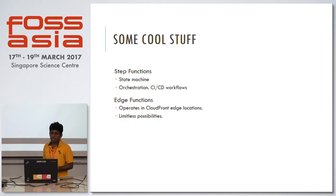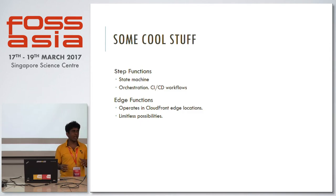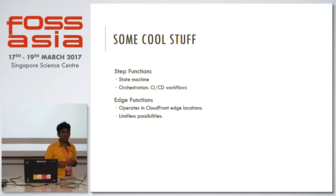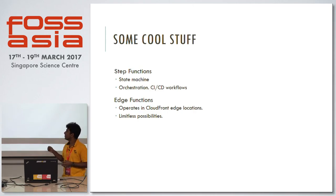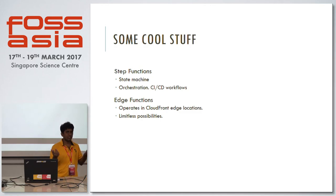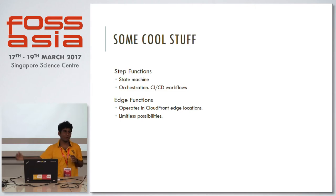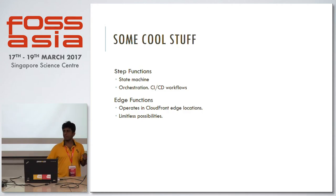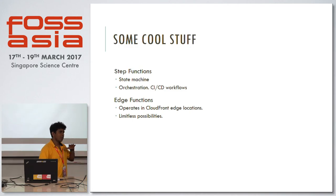There are a lot of cool things coming up, like Step Functions and edge functions. For Step Functions, if you have a set of paths like a state machine, you can use these to recreate that workflow. And there's a really cool feature called edge functions. In the AWS ecosystem, there are a lot of availability zones and edge locations. You can run these functions at the edges rather than going into a server itself, so whenever a request comes in, it will be served from the edge rather than going into their main servers.